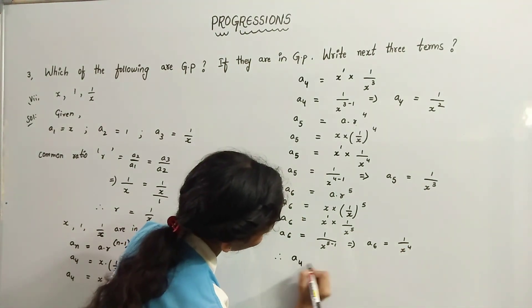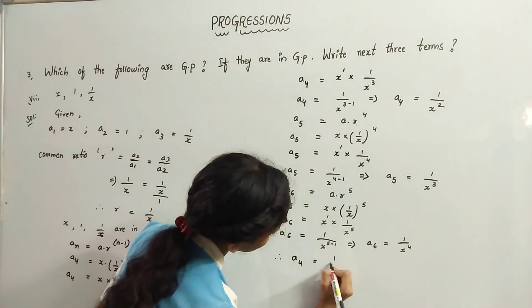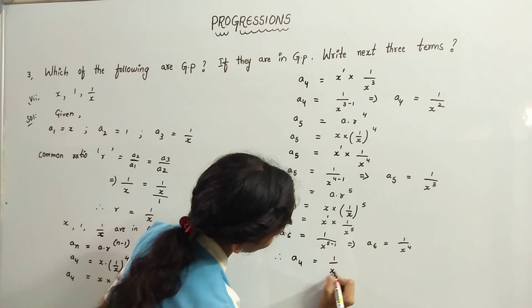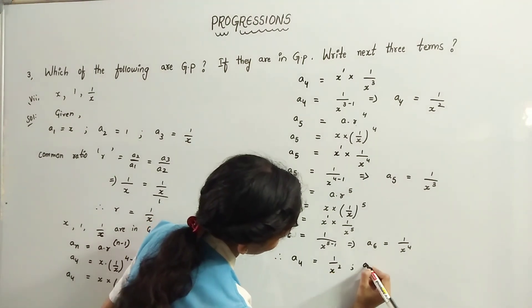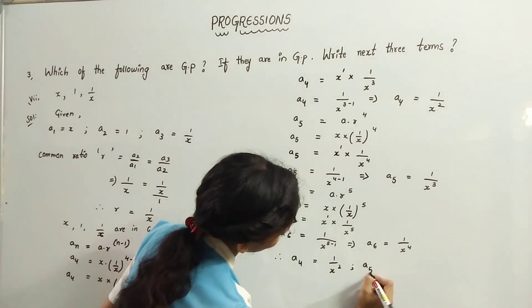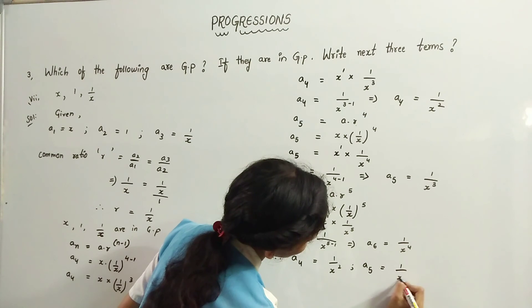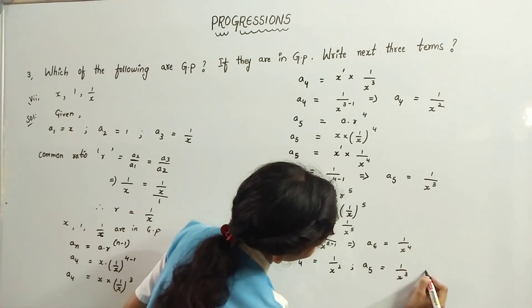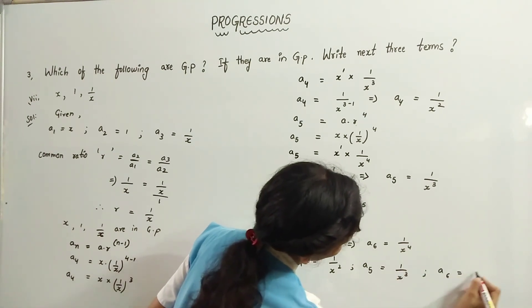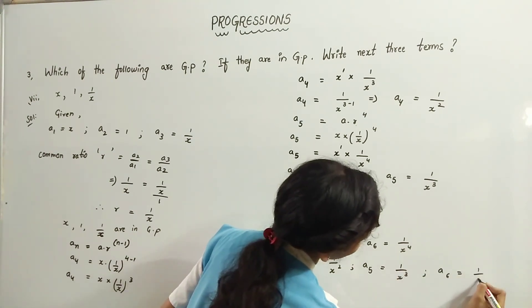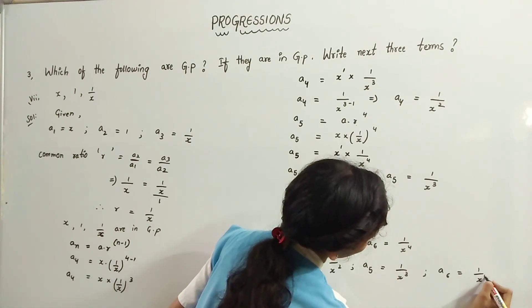Therefore, A4 equals 1 by x squared, A5 equals 1 by x cubed, and A6 equals 1 by x to the power 4.